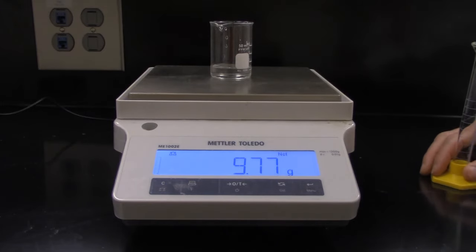Another way to do this would be to measure the mass of an empty beaker, then the mass of a full beaker, and just subtract to get the mass of the water.